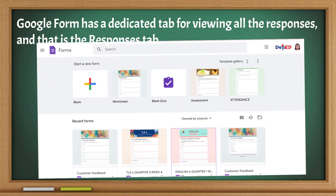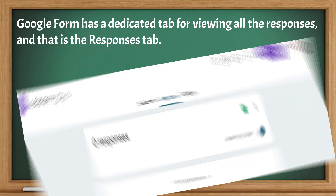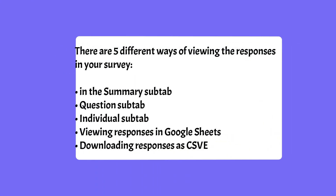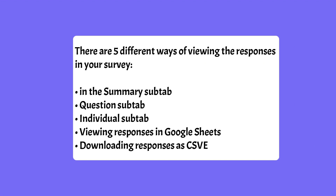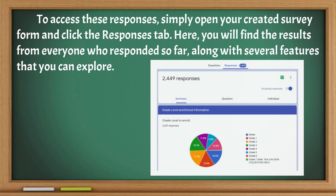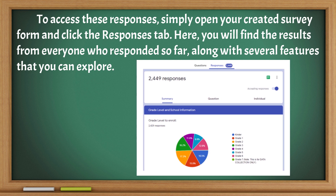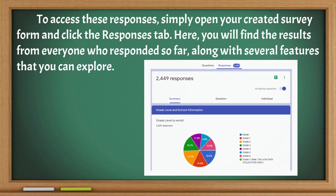Google Forms has a dedicated tab for viewing all the responses — the Responses tab. There are five different ways of viewing the responses in your survey: the Summary sub-tab, Questions sub-tab, Individual sub-tab, viewing responses in Google Sheets, and downloading responses as CSV. To access these responses, simply open your created survey form and click the Responses tab.